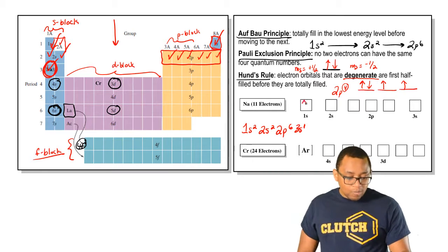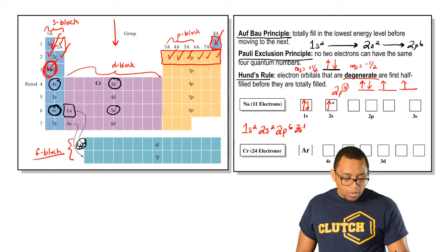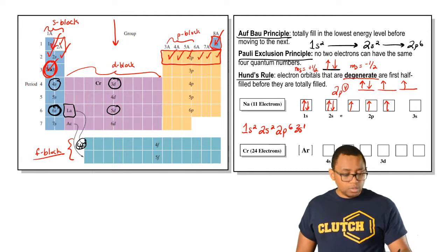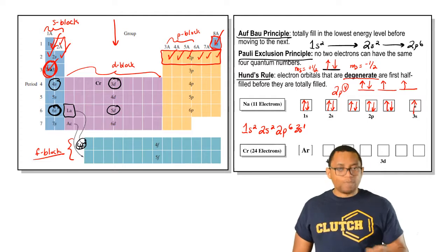If we have to fill that out, that'd be 1 up, 1 down, 1 up, 1 down, up, up, up, since they're all 2P, Hund's rule, down, down, down, and then one more for 3S.